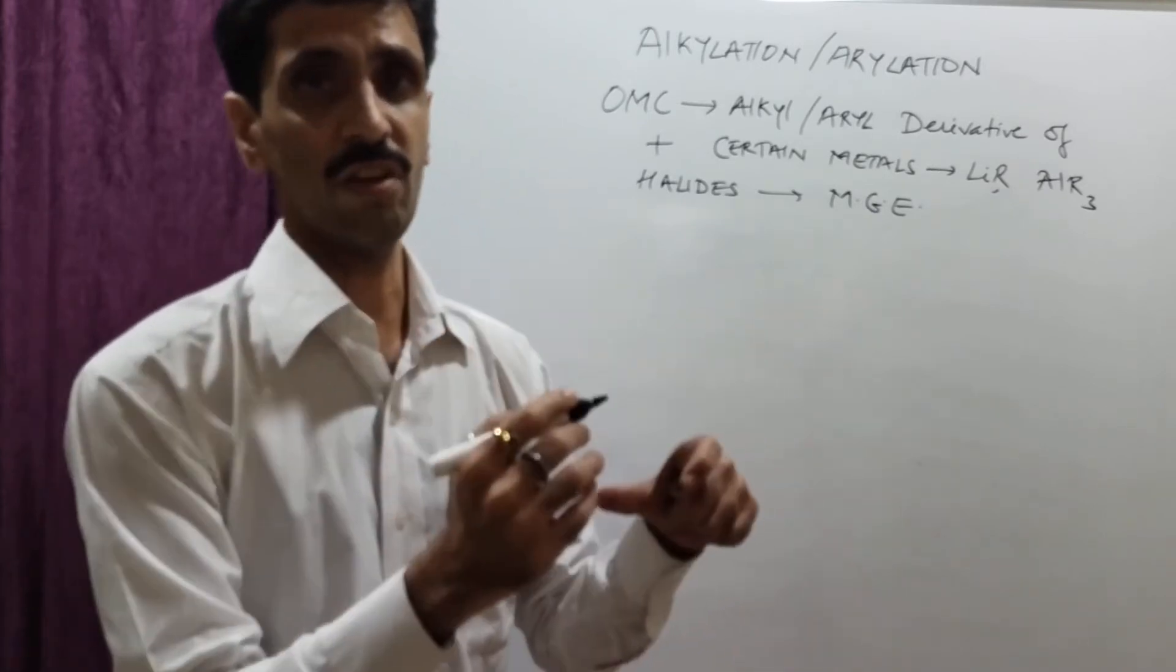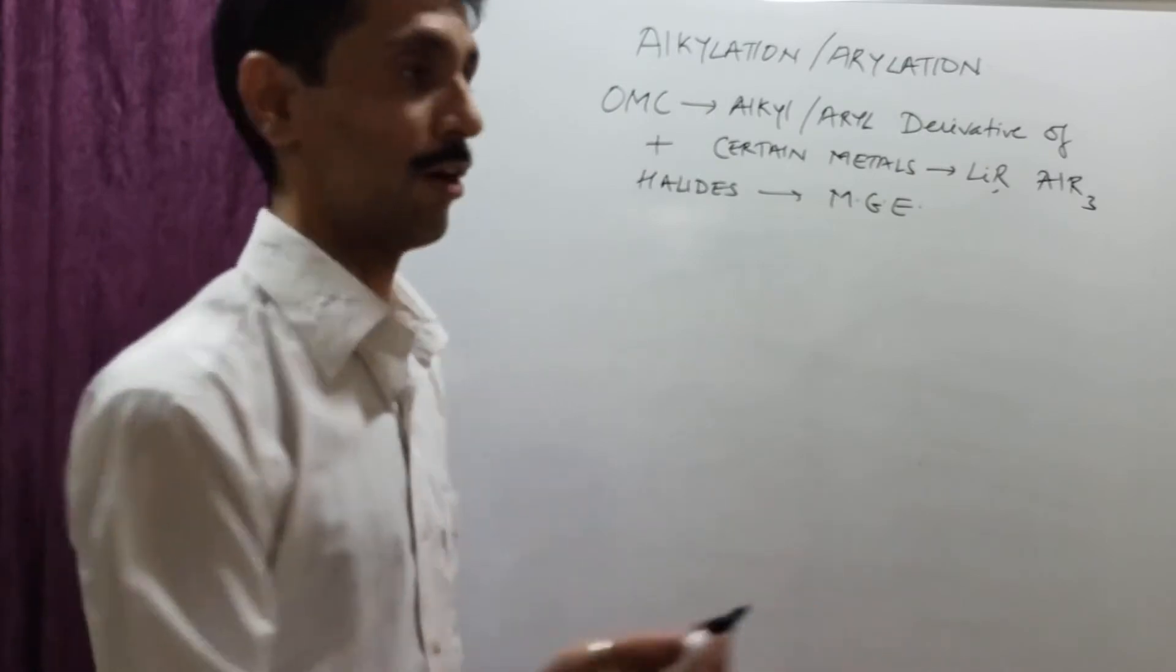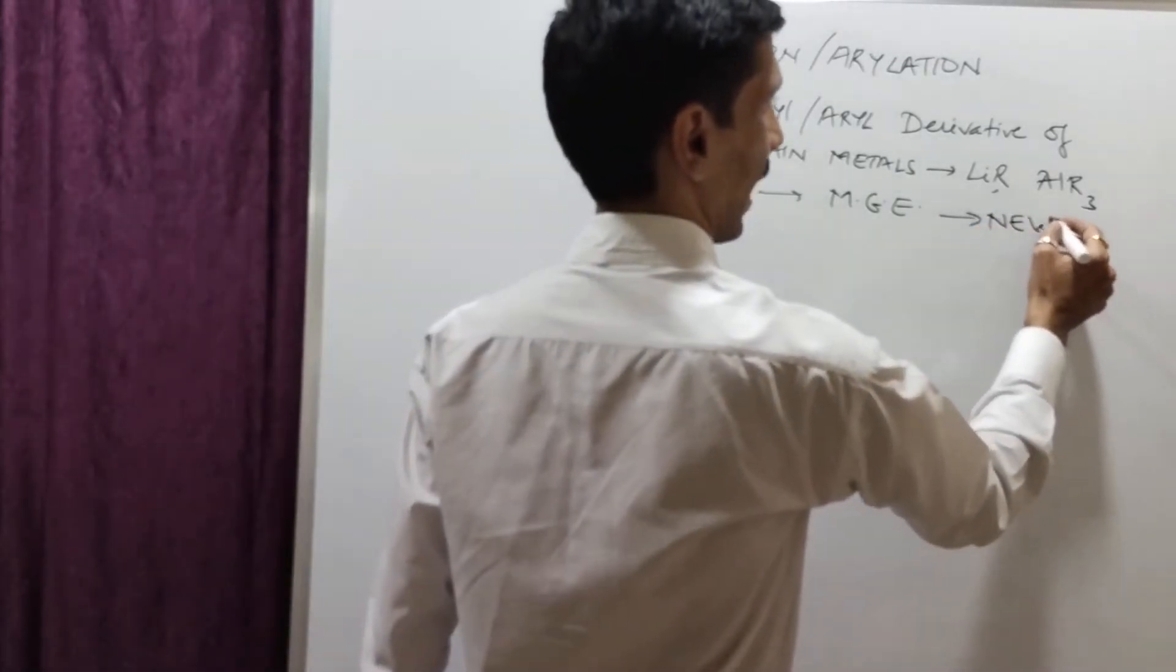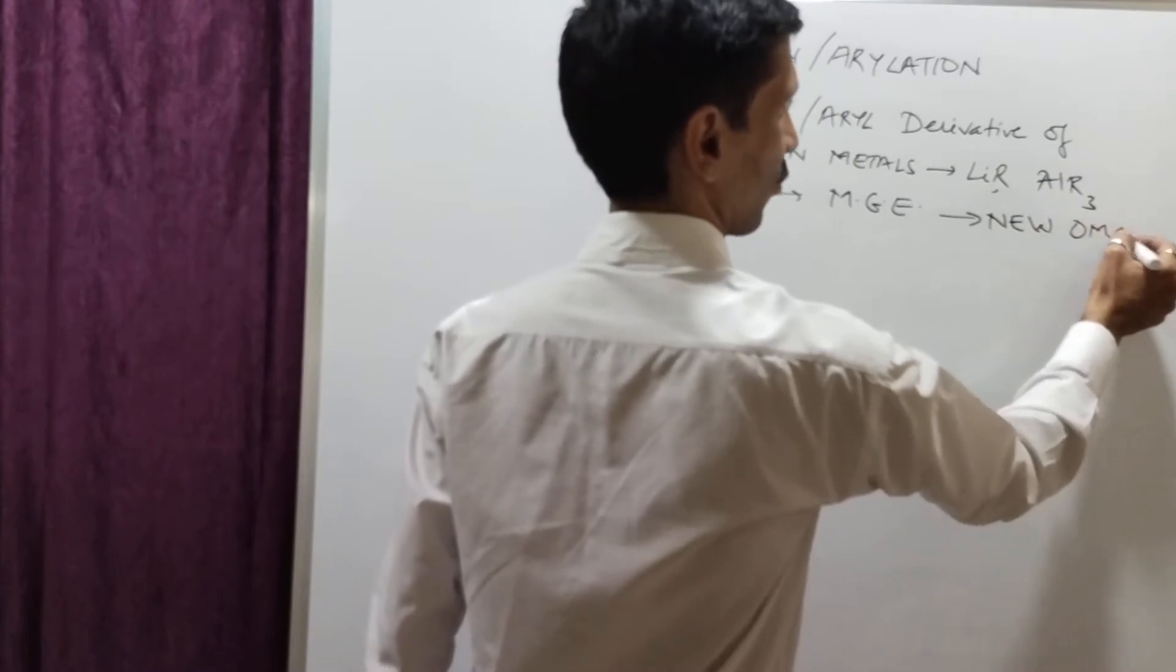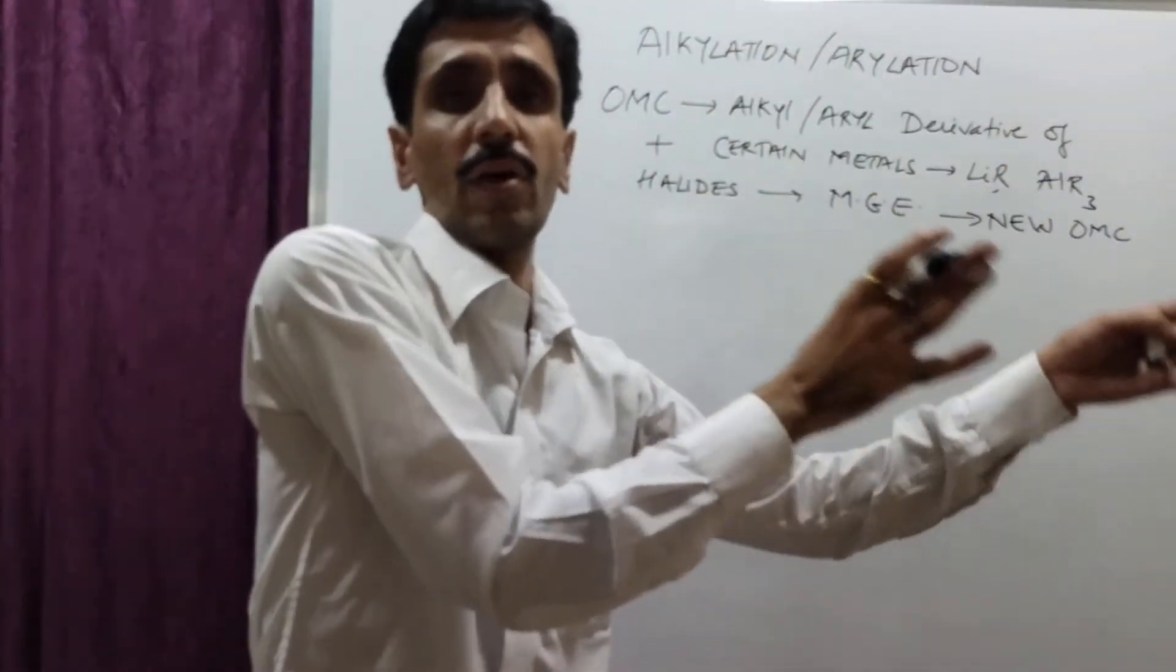So, this is what the reaction is all about. And then, when these two react, obviously there has to be a product formed and it results in the formation of new organometallic compounds. So from one organometallic compound, we will be getting another organometallic compound.